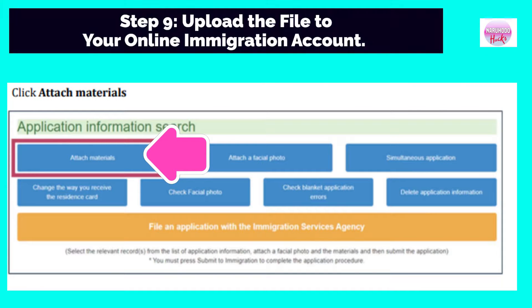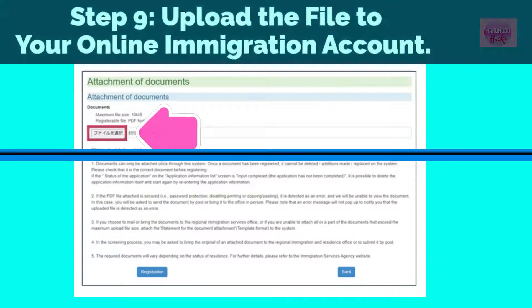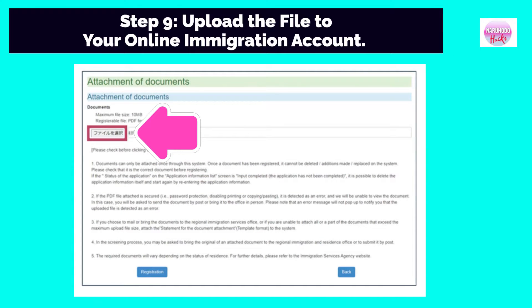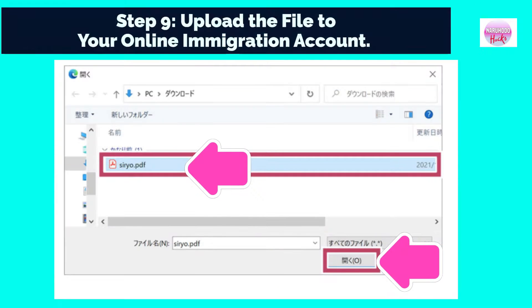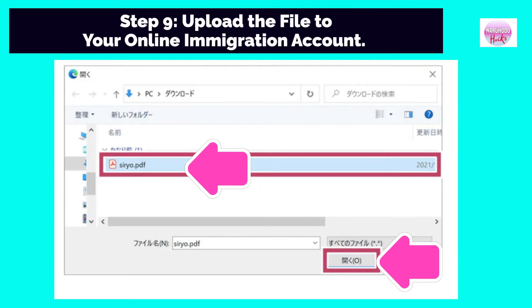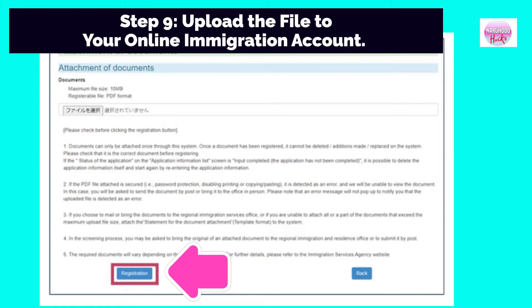Step 9: Upload the file to your online immigration account. To do this, click Attach Materials. Next, click Select File. Select the document to be uploaded and click Open. To finalize this process, click the Registration button.